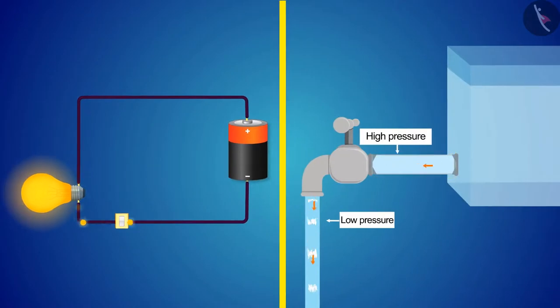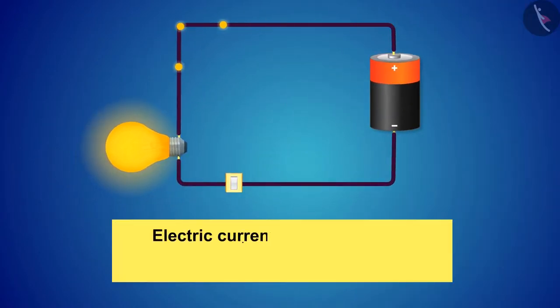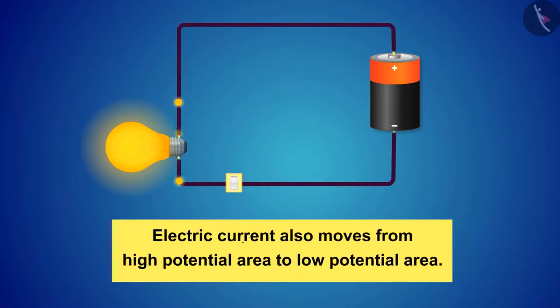Just as the water flows from high pressure to low pressure area, similarly electric current also moves from high potential area to low potential area.